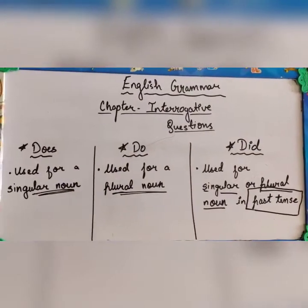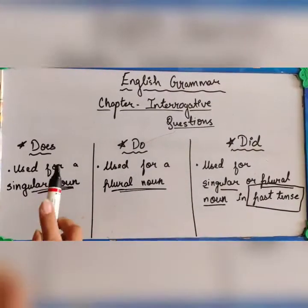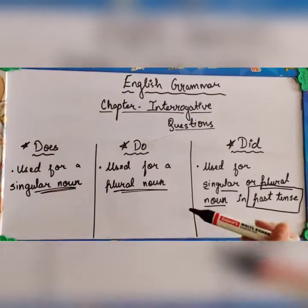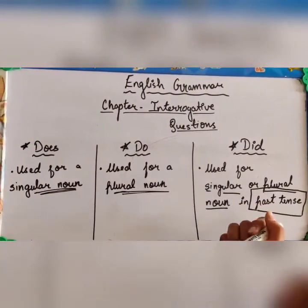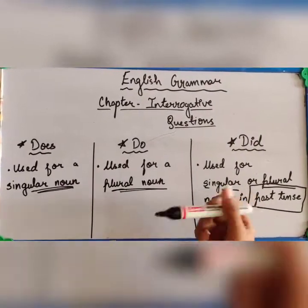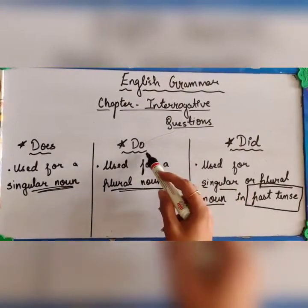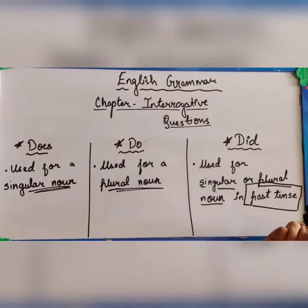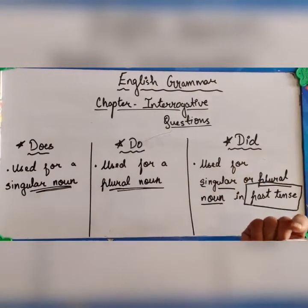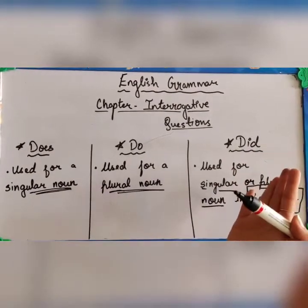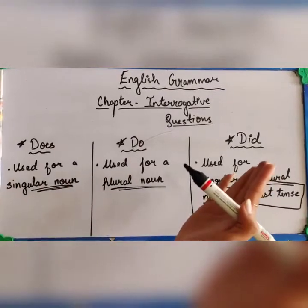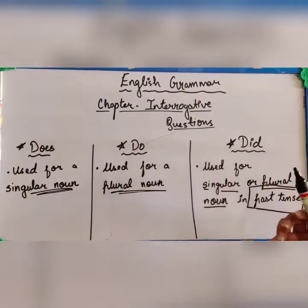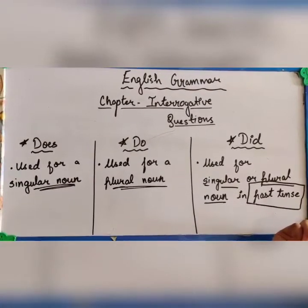Remember: when we have to ask a question to a single person, we use the word 'does'. If we want to ask a question for more than one person, we use the word 'do'. And if we are asking about the past tense — whether for singular or plural — we use the word 'did'. Let us understand this with examples.